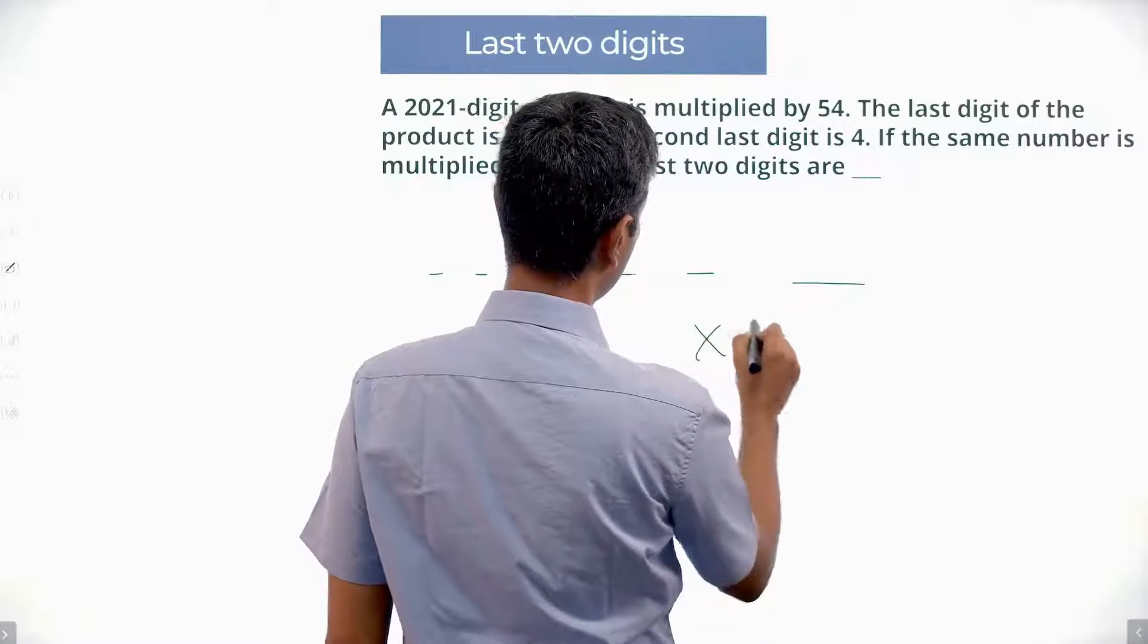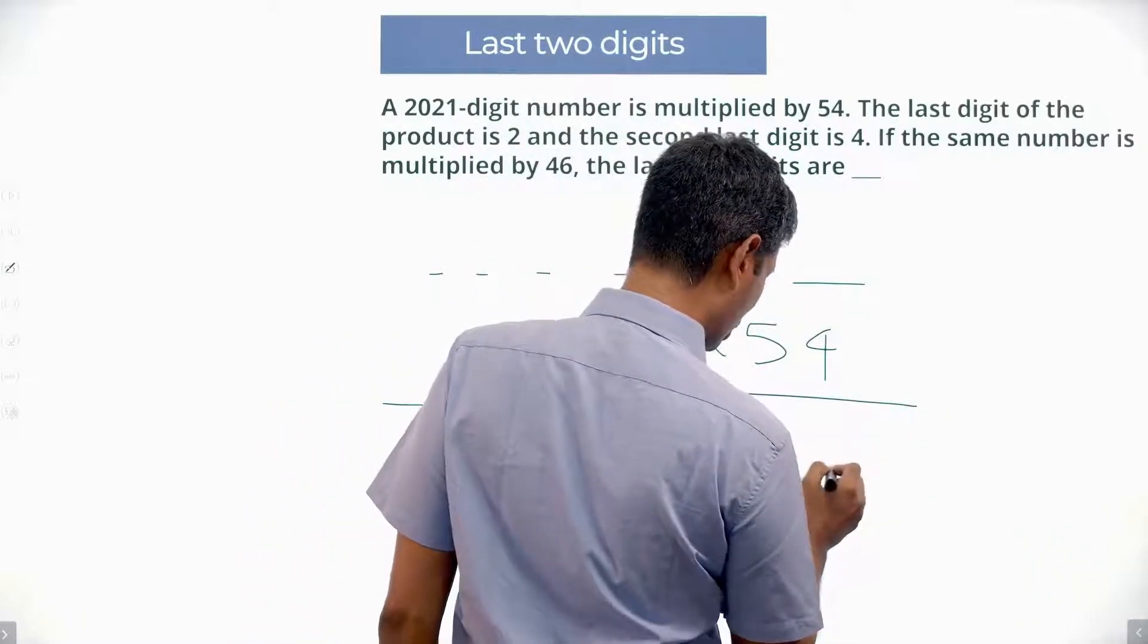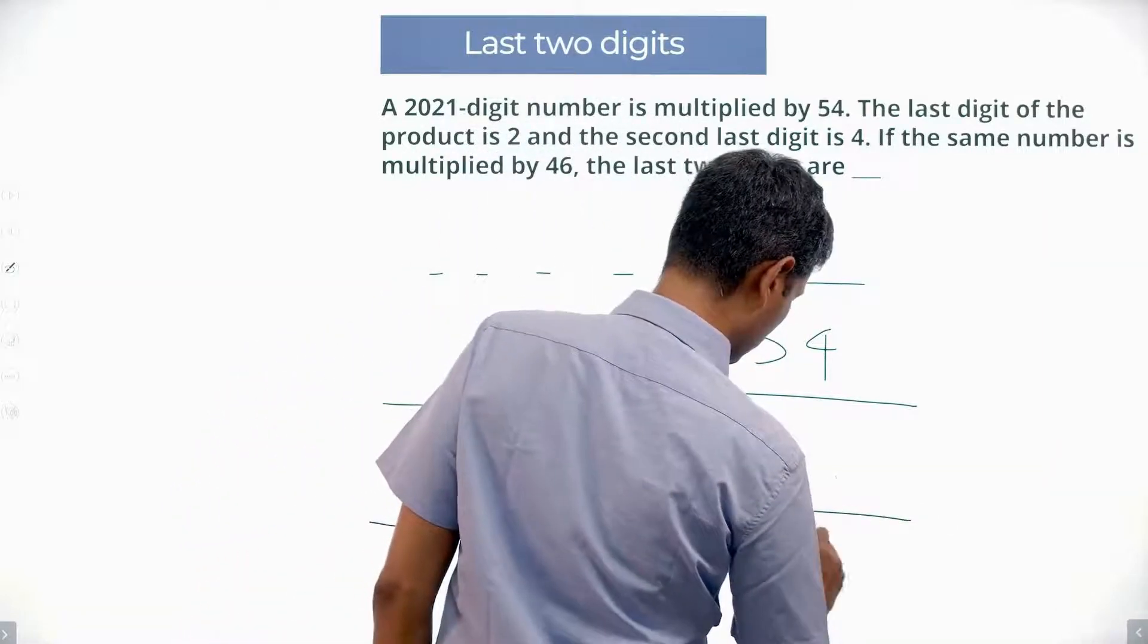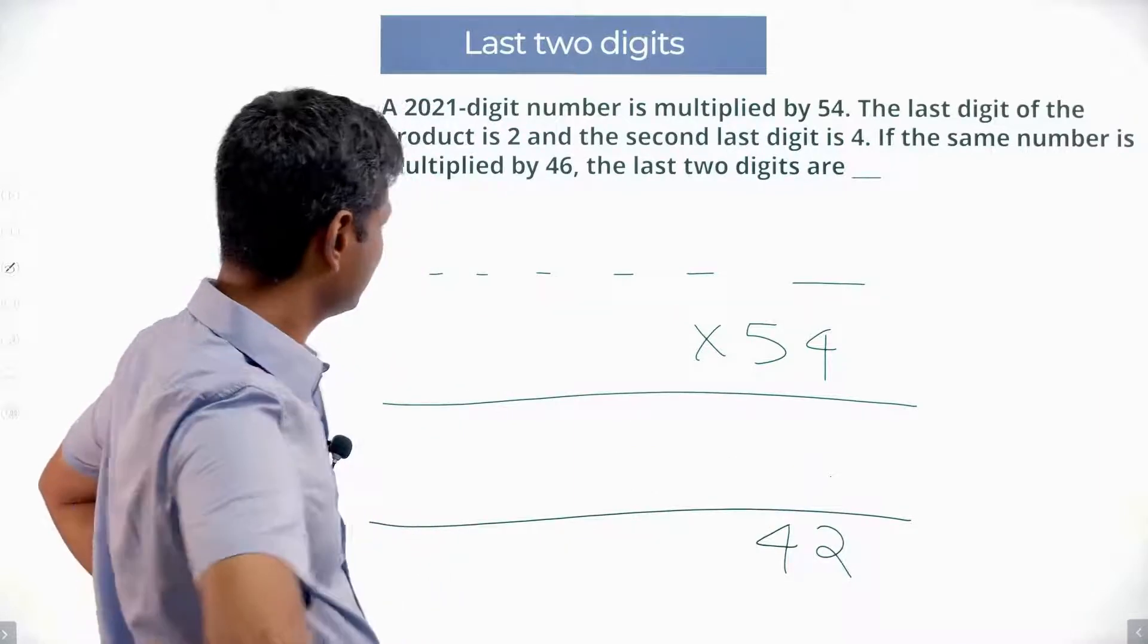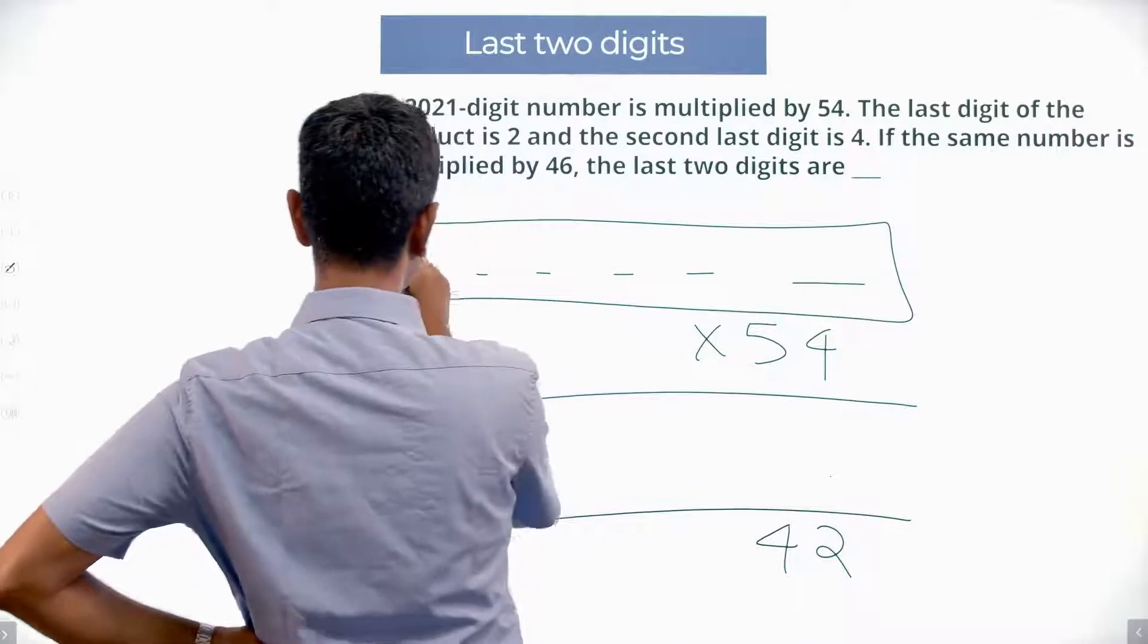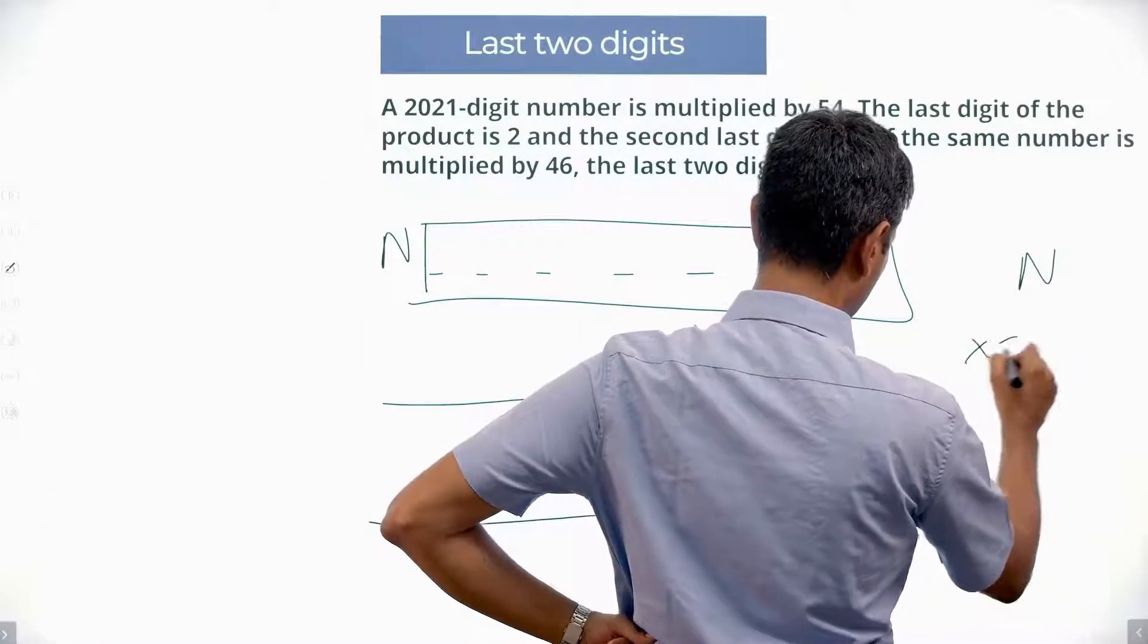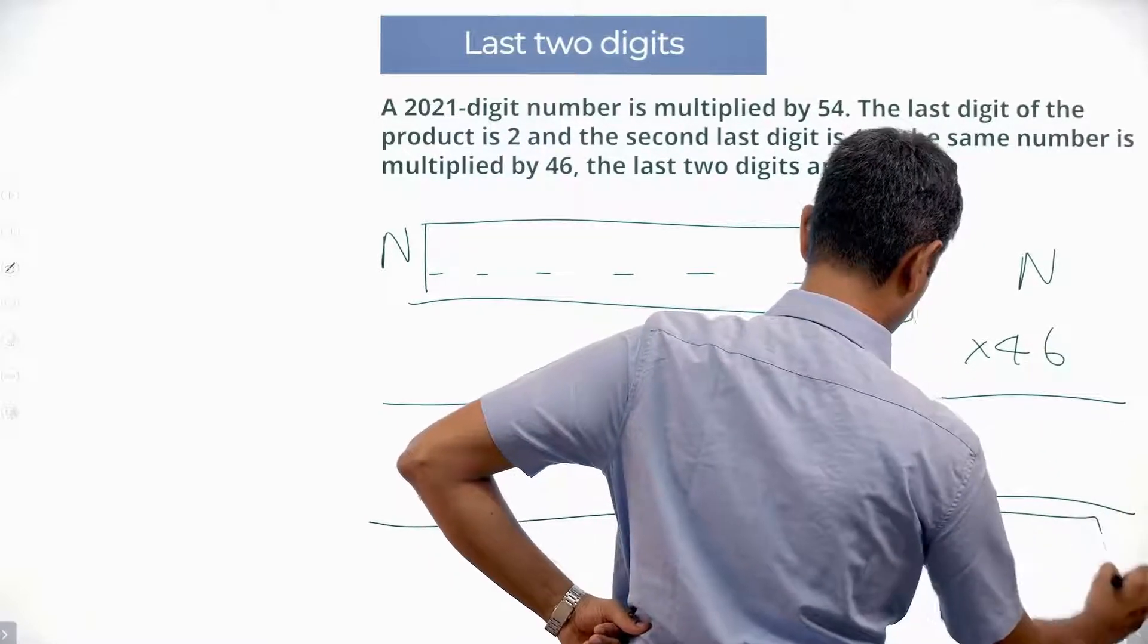It's multiplied by 54. Last digit is 2, second last is 4. This is 42. The same number, let's call this number N. Same number N is multiplied by 46. What will be the last two digits?